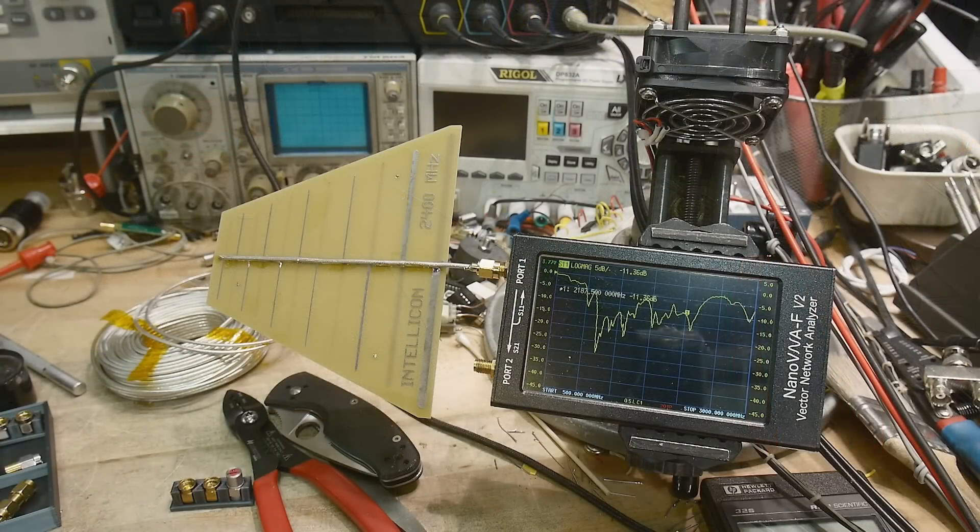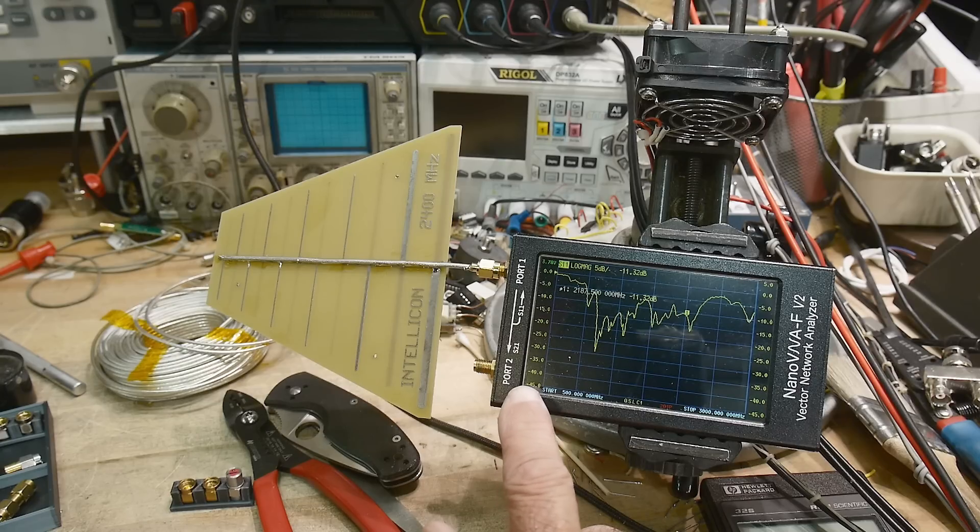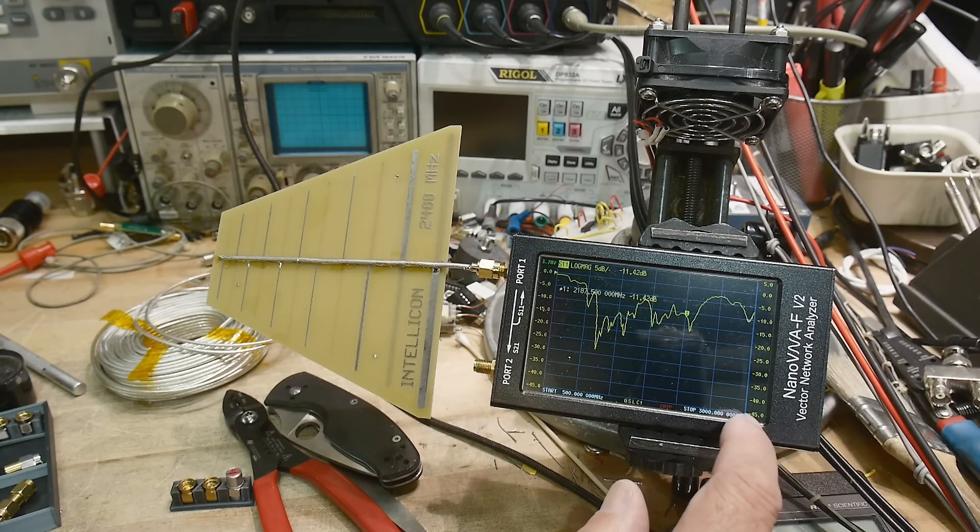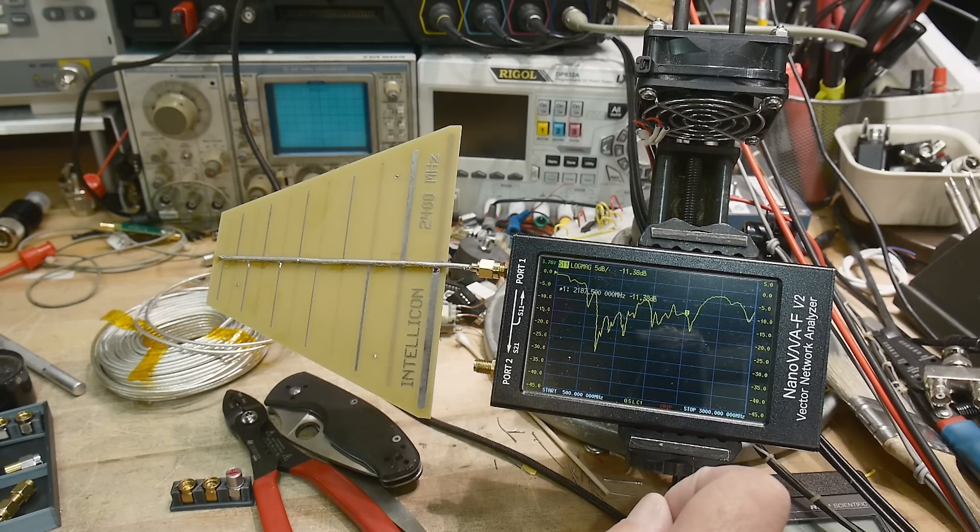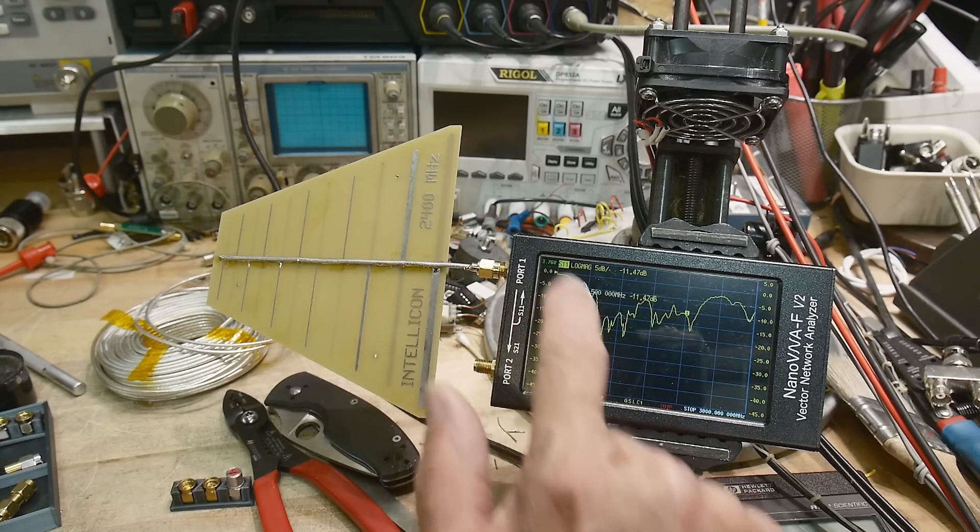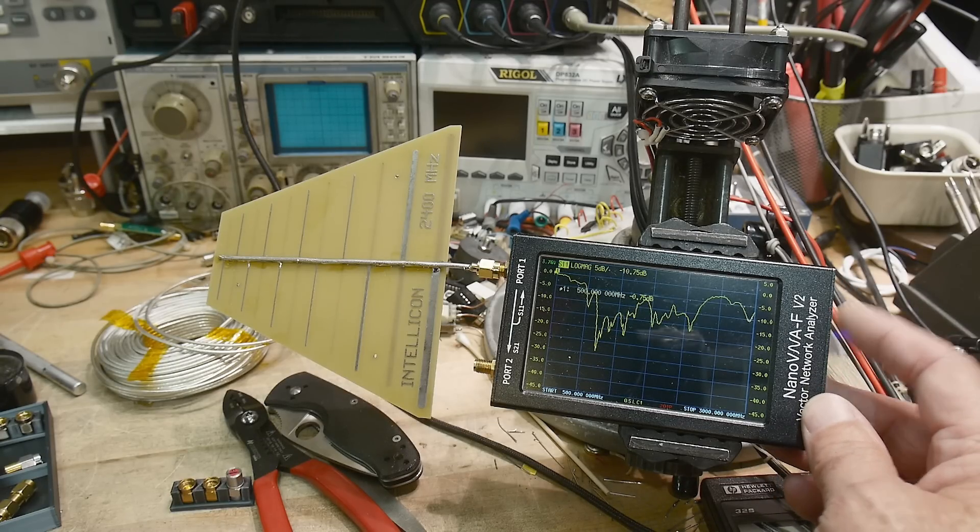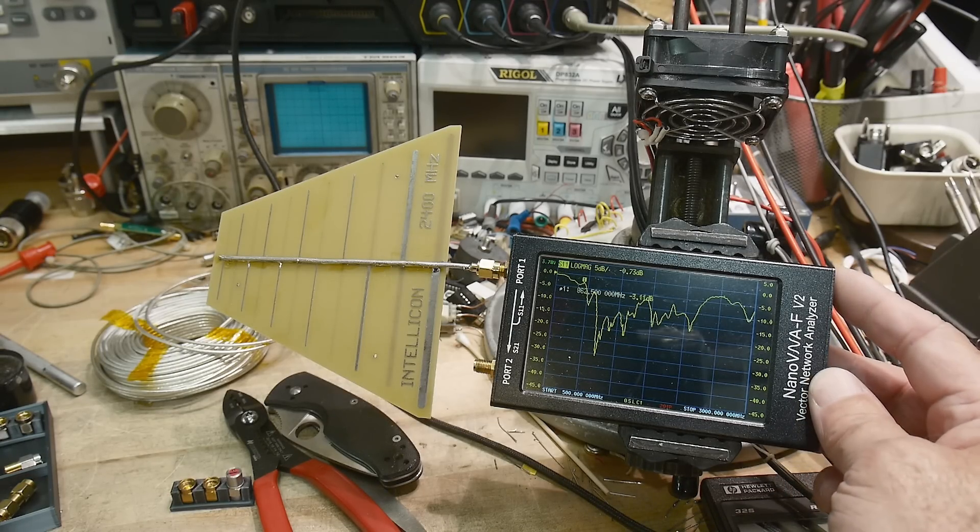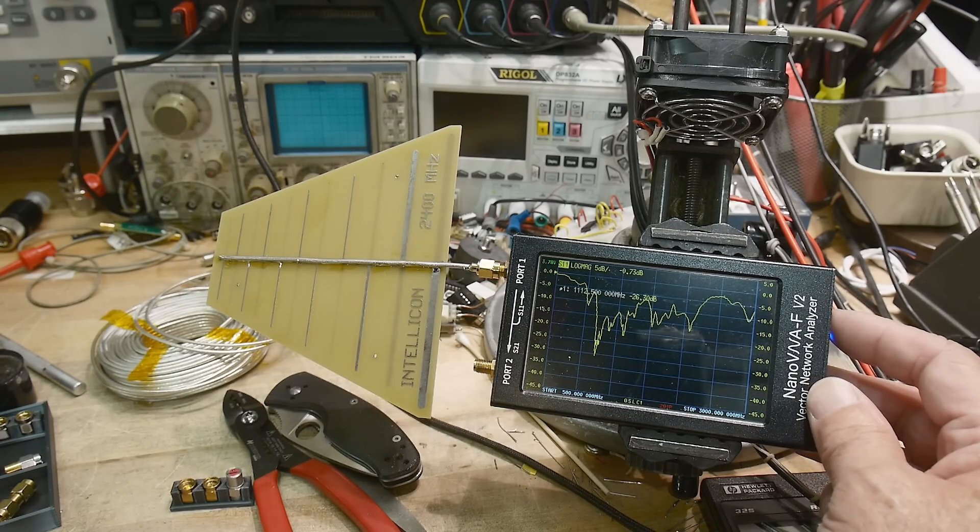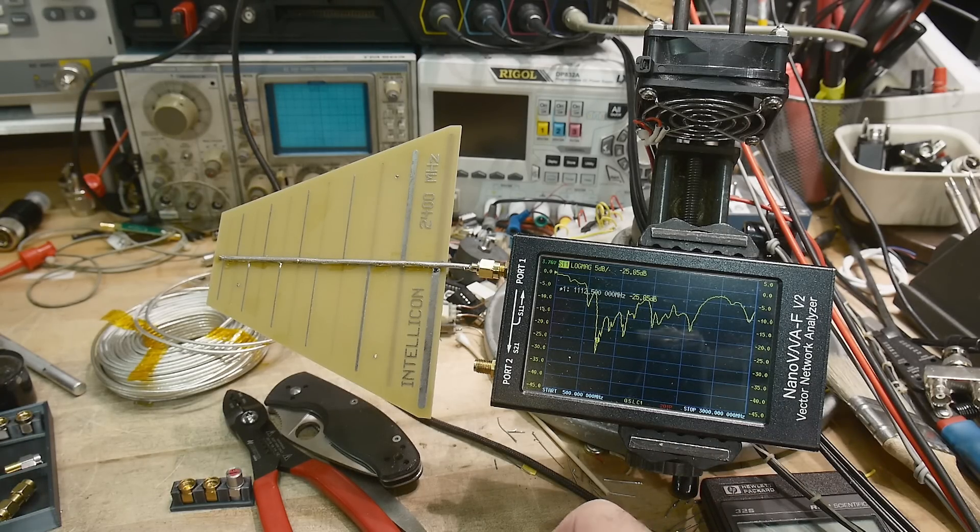All right, so we have the VNA calibrated. It's going from 500 megahertz to 3000 megahertz. And here's our antenna. This is S11, and you can see it's dipping down. Let's see if we can move the cursor. There we go.